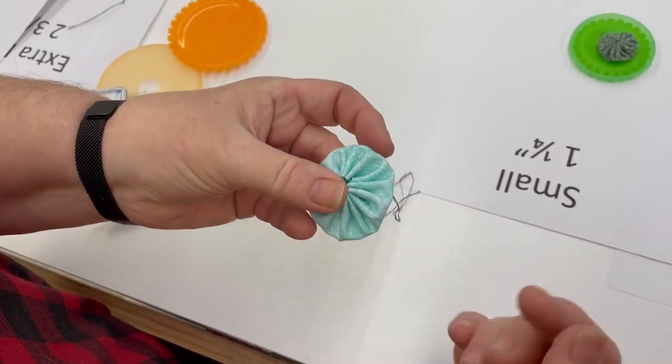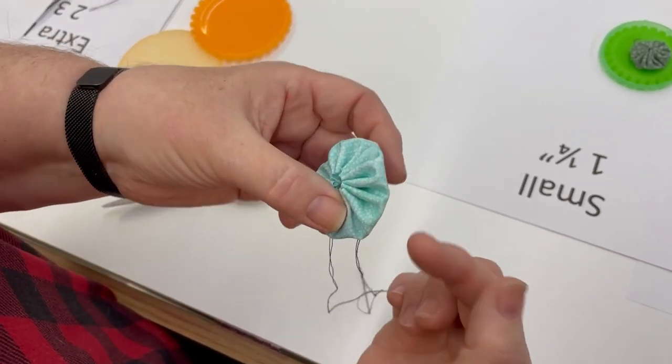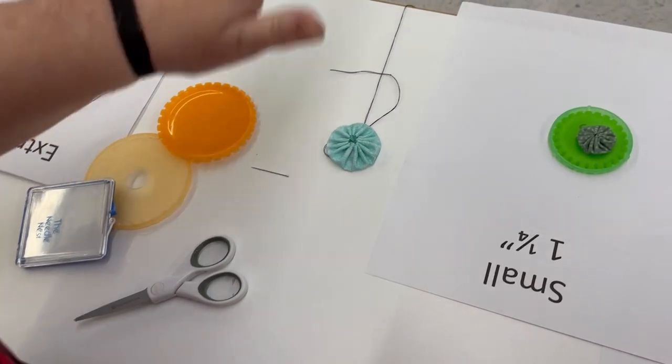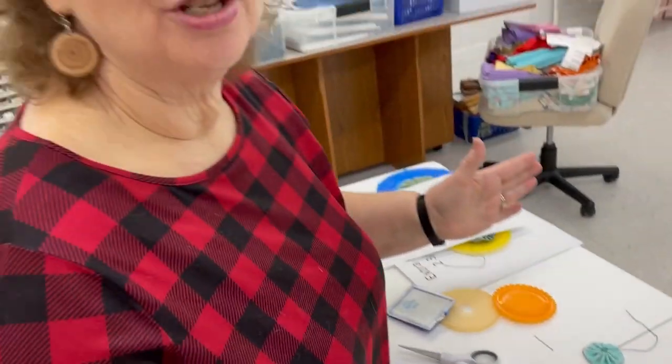So now it's just ready. And to put it on a project, you just hand stitch along the edge. And that's it for making yo-yos. So grab a yo-yo maker and start adding pizzazz to your quilts.